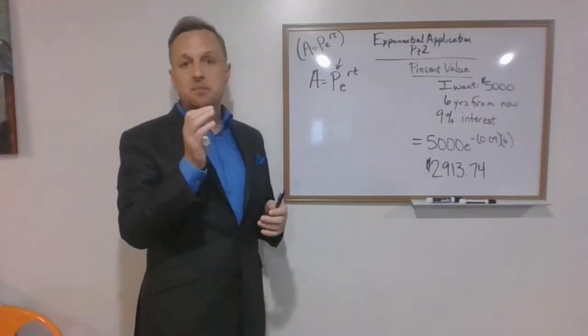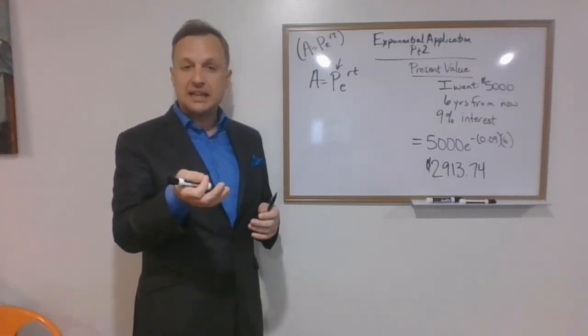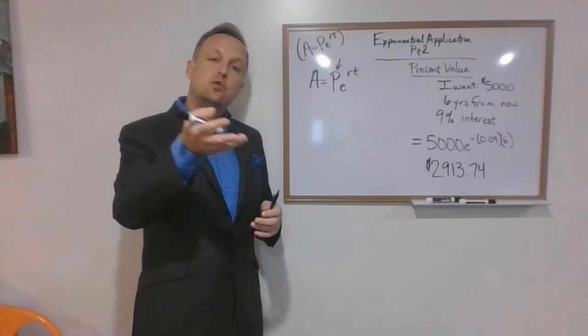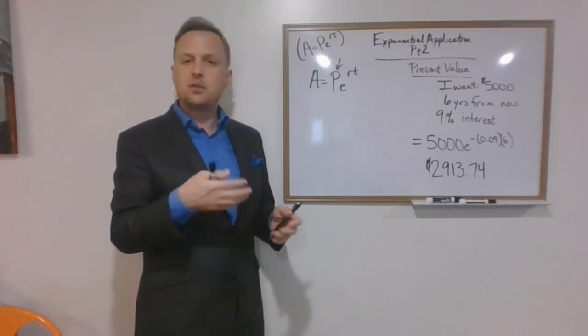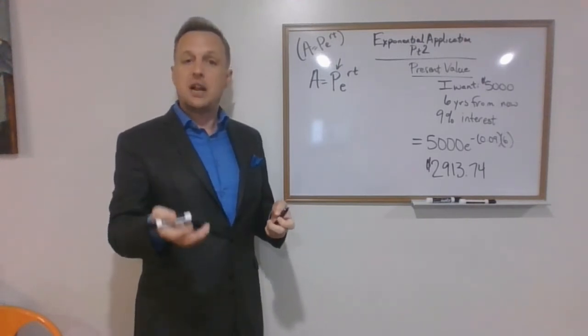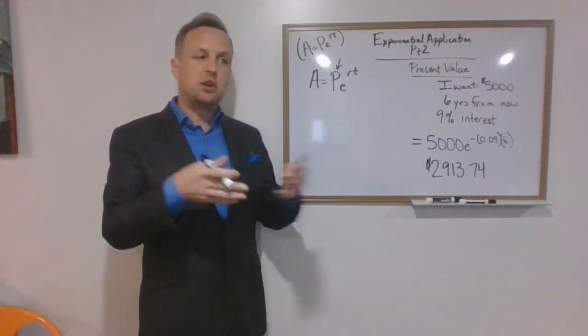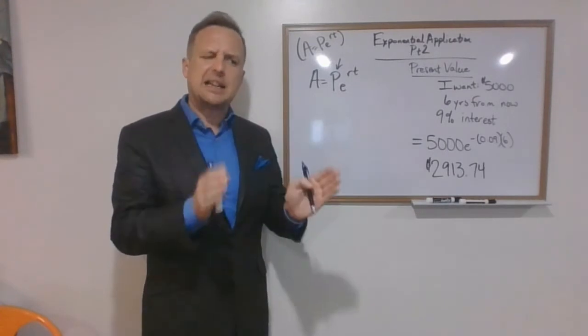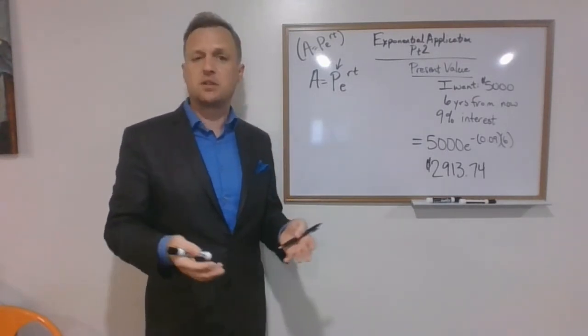I would always want to plug the numbers in first and then do all the multiplication and division to isolate whatever the variable was. But as our calculations need to become more and more precise, we need to do all of our manipulations on the front end. So those of you that have been caught on the trig with rounding errors, generally that's the issue.